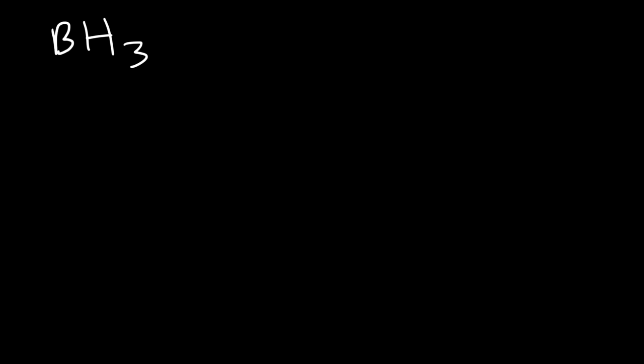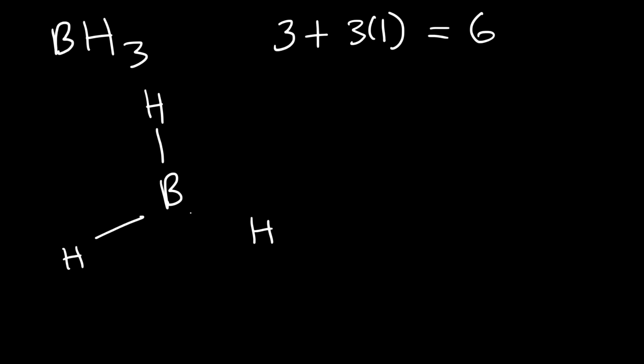The first example that violates the octet rule is BH₃. To draw the Lewis structure, we need to count valence electrons: boron has three and hydrogen has one, so three plus three is six. Every hydrogen atom needs at least one bond, and every bond represents two electrons — two, four, six. There's no way to put eight electrons on boron because we only have six valence electrons total, so boron has no choice but to have an incomplete octet. This is the correct Lewis structure of BH₃.